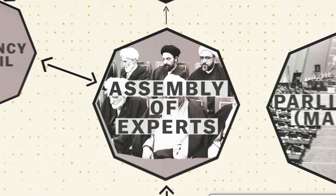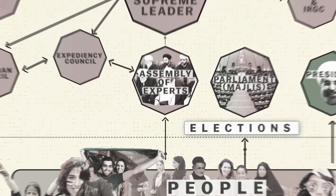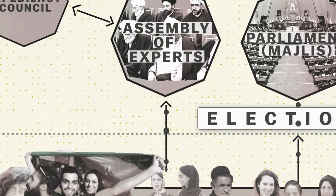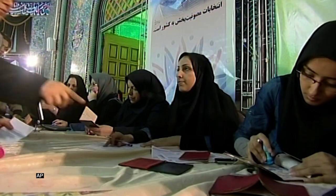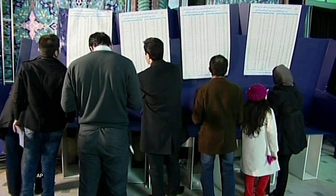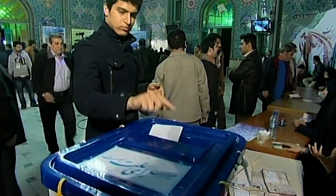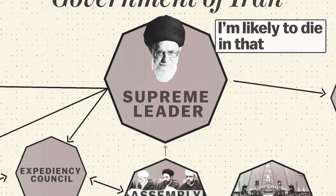Here's where Iran's Islamic Republic system gets interesting. The Assembly's members are elected in a national vote. This year on February 26, Iranians will elect an entirely new Assembly of Experts for an eight-year term. Even Ali Khamenei, the current supreme leader, has acknowledged that he's likely to die in that time.